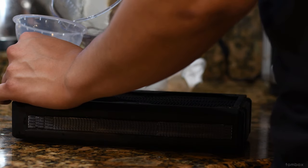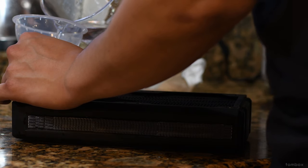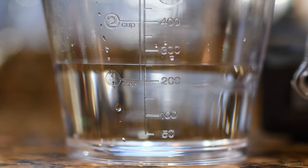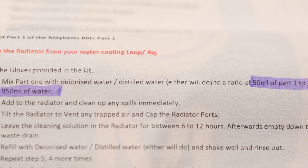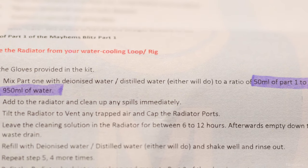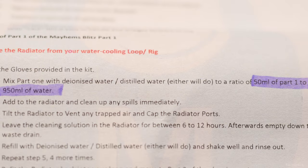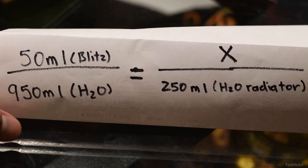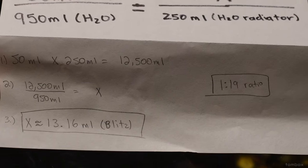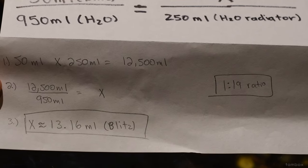I measured how much my radiator could approximately hold and it came out to be 250 milliliters. Since shipping cost almost as much as the whole product, I didn't want to make more than required. I did a little cross multiplication and came up with approximately 13.16 milliliters of acid to 250 milliliters of distilled water.